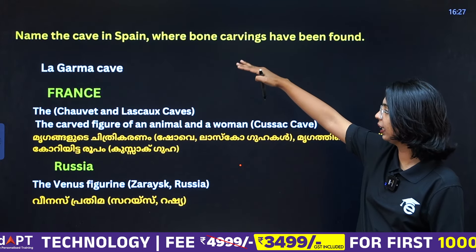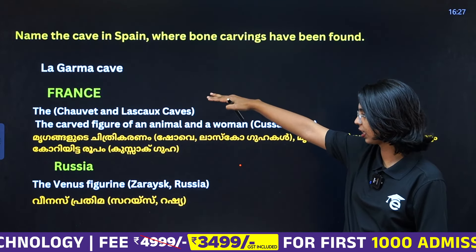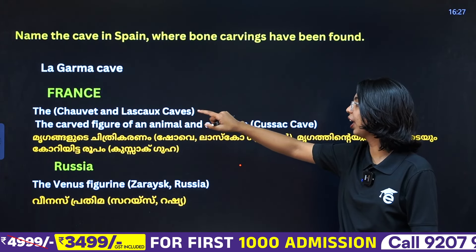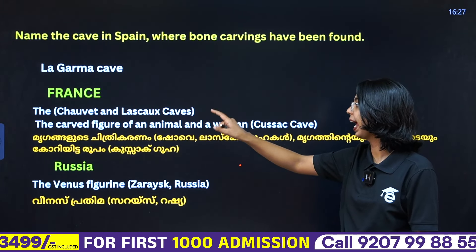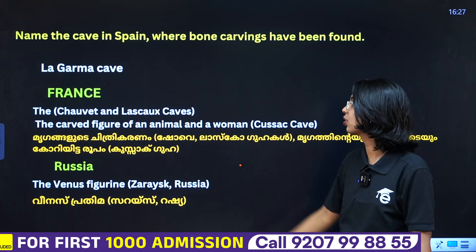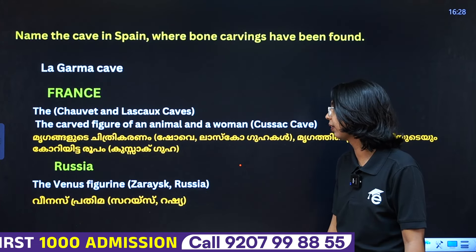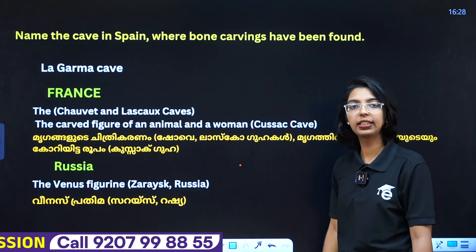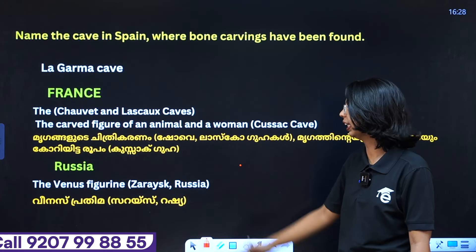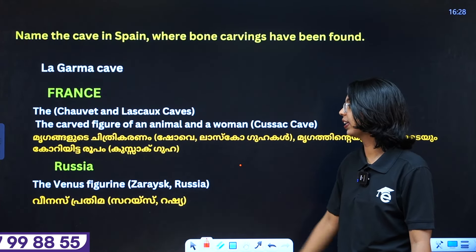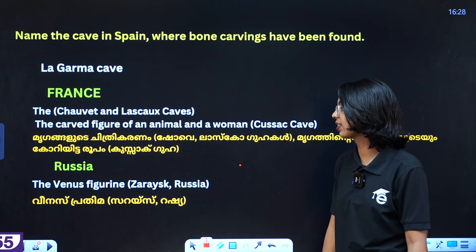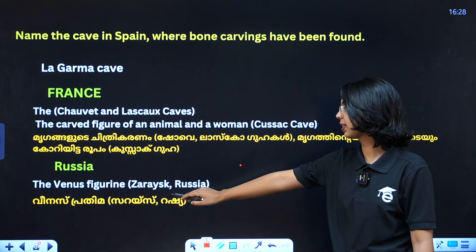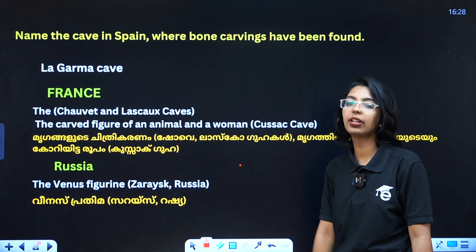If you are interested in Spain, there are La Garma Caves. In France, what are they called? Chauvet and Lascaux caves, and then Cosquer caves. And what is called Venus? That is Venus and Cyrus.